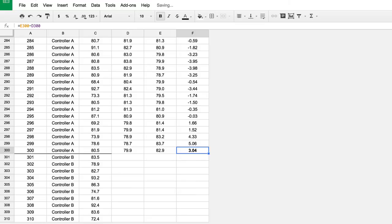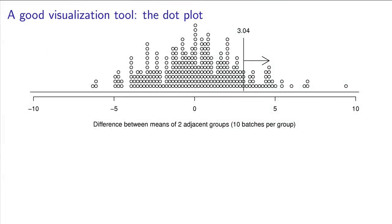And we can show this effectively using a dot plot. A dot plot is a new type of plot, but it is intuitive. Place a dot on the horizontal number line corresponding to the difference.